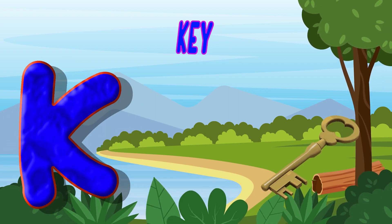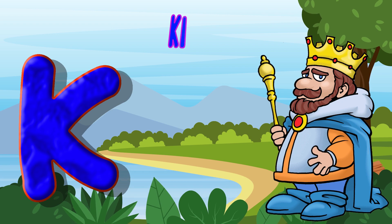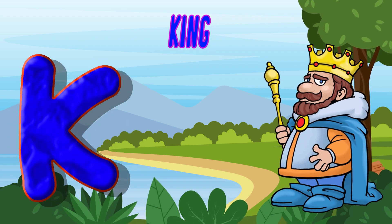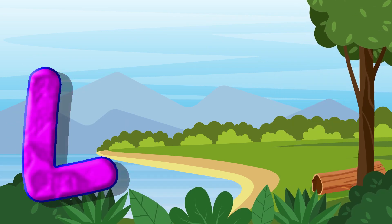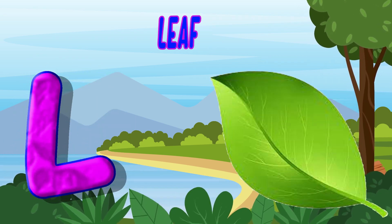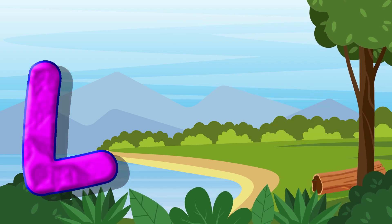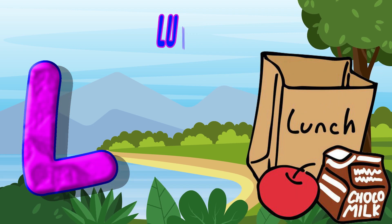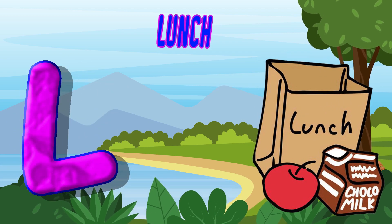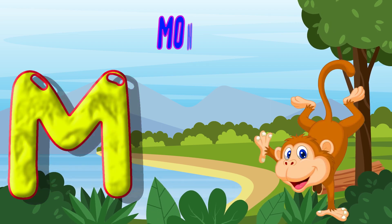K is for Key. K, K, Key. K is for King. K, K, King. L is for Leaf. L, L, Leaf. L is for Lunch. L, L, Lunch.